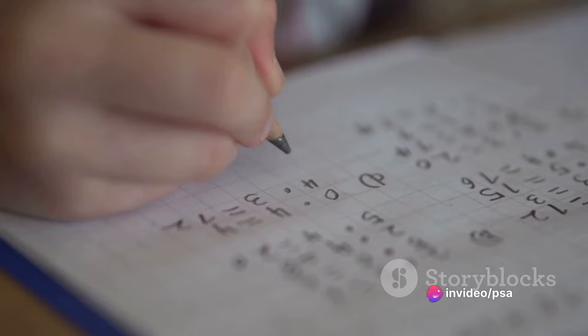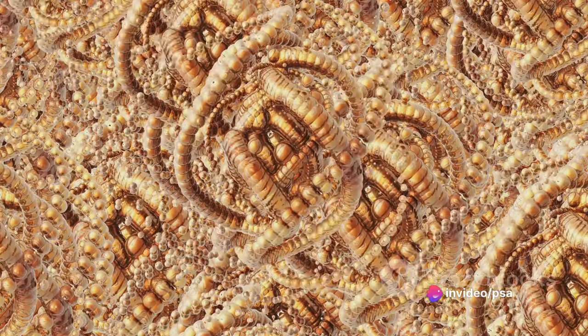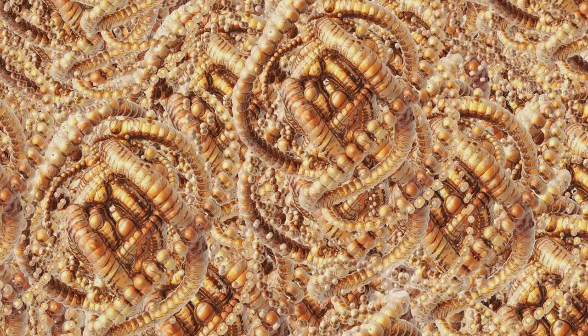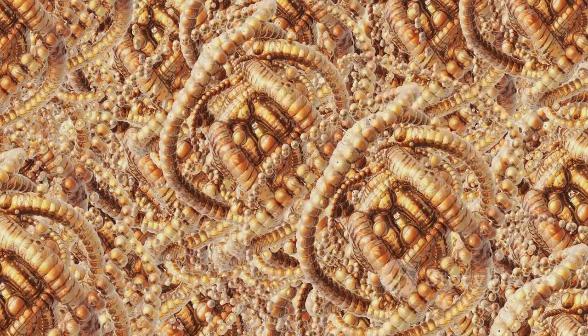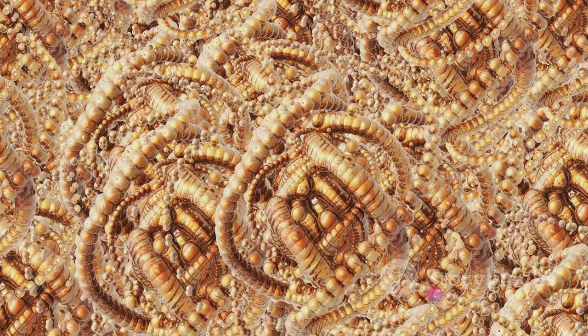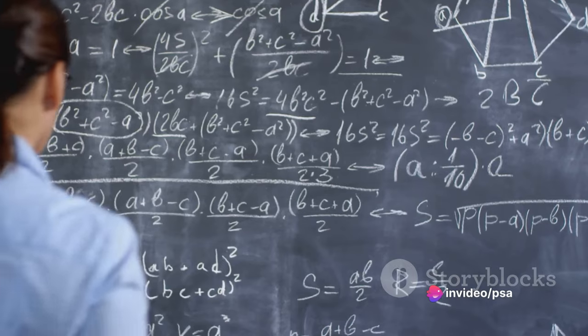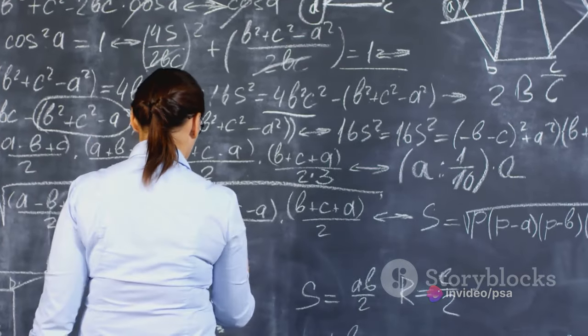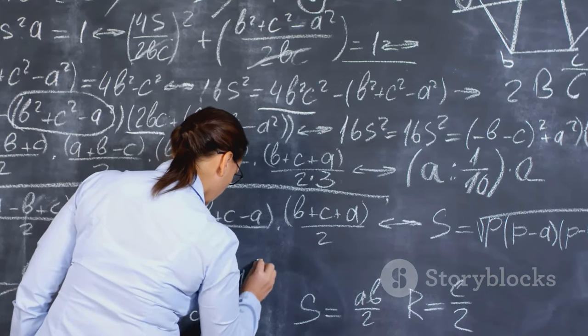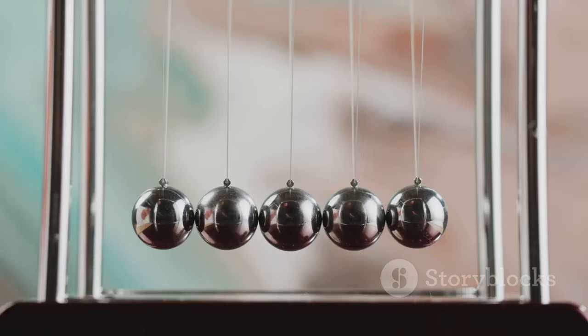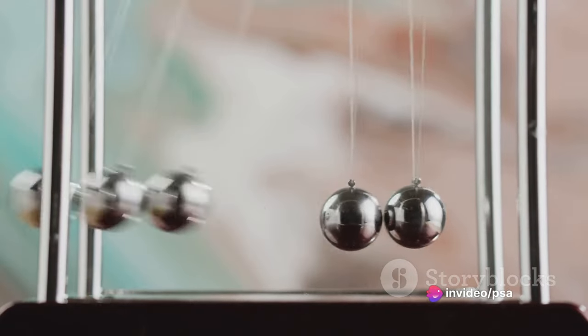You see, calculus is all about studying how things change, and one of the key ways it does this is through a concept called integration. The principle of Cavalieri is a precursor to the concept of volume integration in integral calculus. It provides a way to understand the idea of slicing an object into infinitesimally thin sections, summing the volumes of these sections, and thereby determining the total volume of the object. This is a fundamental concept in integral calculus, and it's all thanks to Cavalieri's principle.